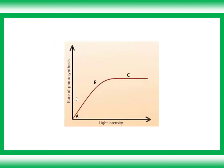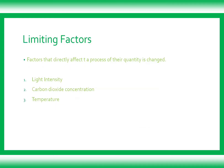Now let's discuss the limiting factors of photosynthesis. A limiting factor is one that directly affects the process if its quantity is changed. The limiting factors for photosynthesis are: light intensity, carbon dioxide concentration, and temperature. These three are all external factors — nothing is changed in the plant, but something is changed in the environment.